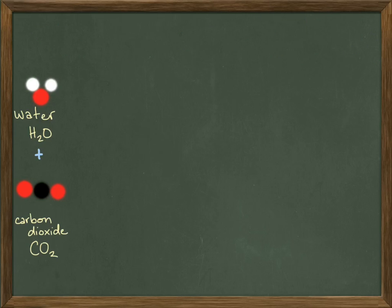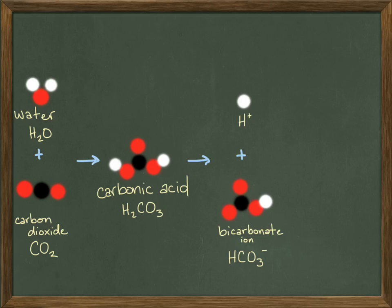The equation for the buffer system starts with water and carbon dioxide. Together, they yield carbonic acid. Carbonic acid can further break down to form a bicarbonate ion and a hydrogen ion, or even further, to yield two hydrogen ions and a carbonate ion.